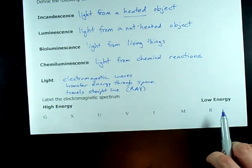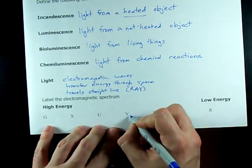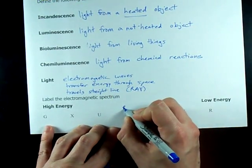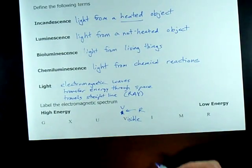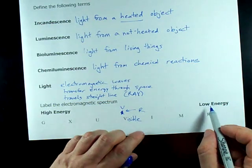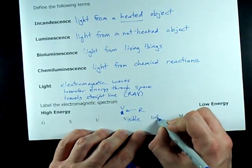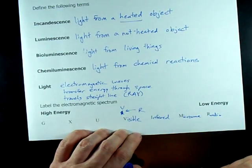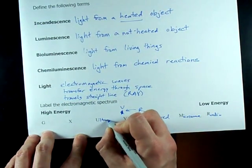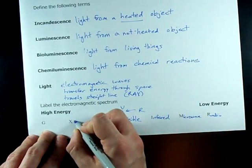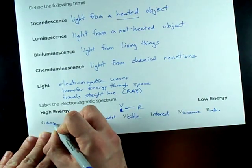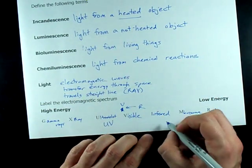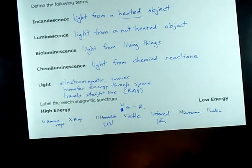The last thing I want to remind you of is the electromagnetic spectrum, where visible light is the light that we can see — it goes from red all the way up to purple or violet. The light of lower energy is infrared, microwave, and radio waves. The light of higher energy is called ultraviolet, x-rays, and gamma rays. You can abbreviate ultraviolet as UV and infrared as IR if you'd like. The rest don't have abbreviations.